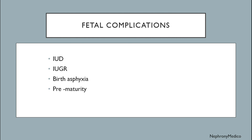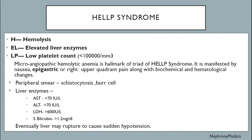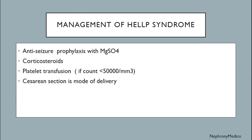Fetal complications: intrauterine death, intrauterine growth retardation, birth asphyxia, and prematurity. HELLP syndrome — hemolysis, elevated liver enzymes, and low platelet count less than 1 lakh per minute; active liver enzymes: AST more than 70, ALT more than 70, LDH more than 600, and serum bilirubin more than 1.2. Management of HELLP syndrome: anti-seizure prophylaxis with magnesium sulfate, corticosteroids, platelet transfusion, and cesarean section for delivery.